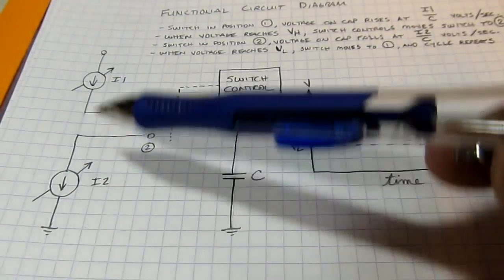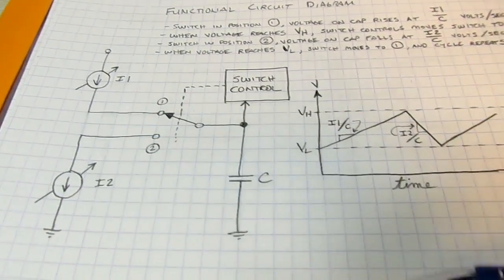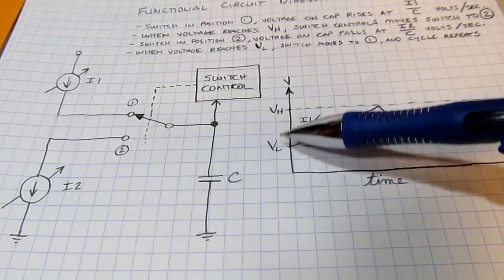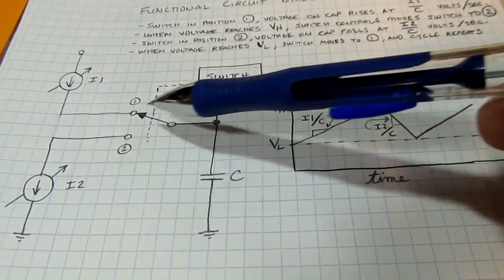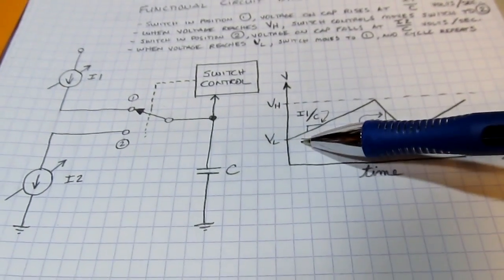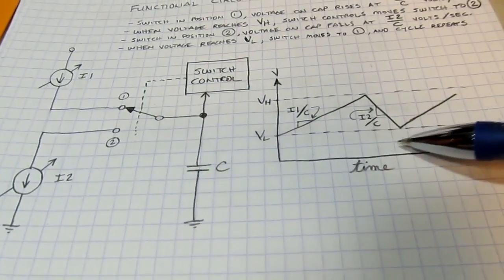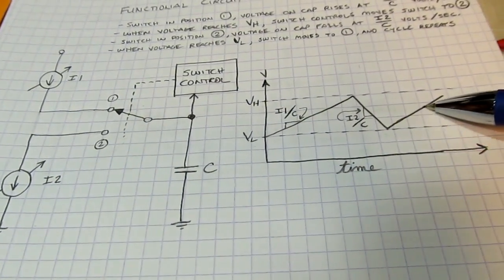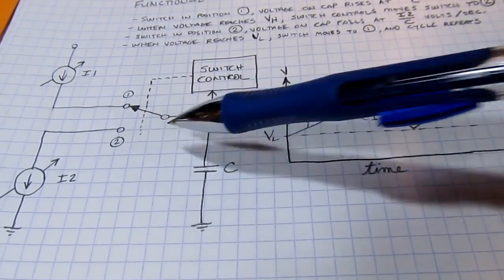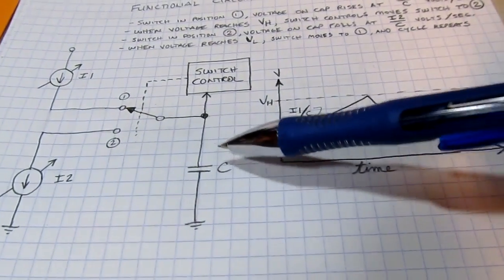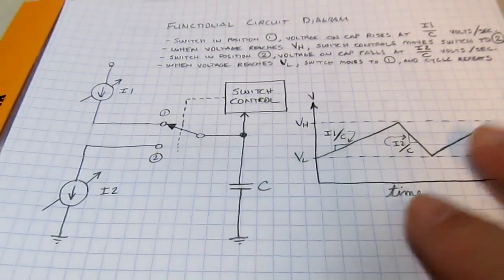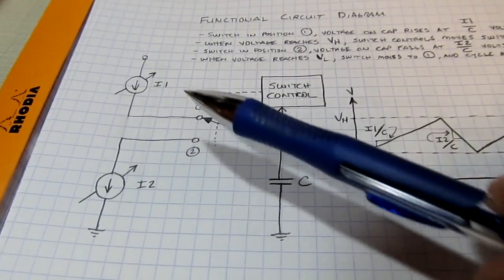By varying the two currents we get rising and falling slopes that vary independently. A simple circuit sets up two thresholds: when the voltage drops to the lower threshold we flip the switch so the voltage starts to rise, and when the voltage rises to the upper threshold we flip the switch the other way and the capacitor gets discharged. That's how the basic circuit works.